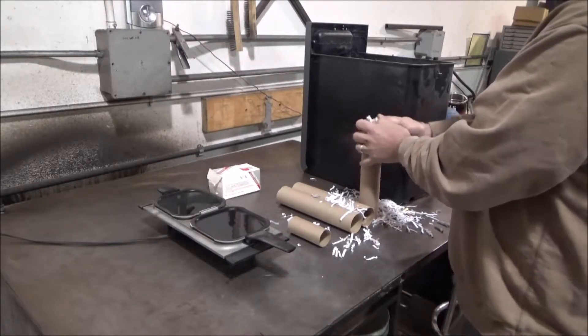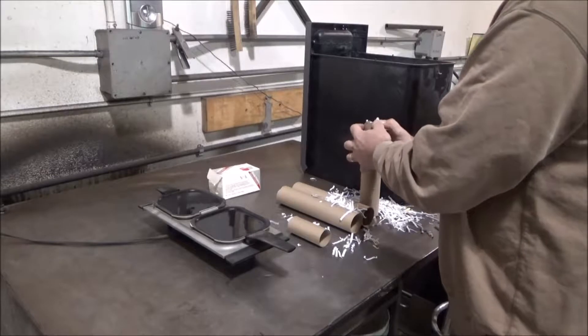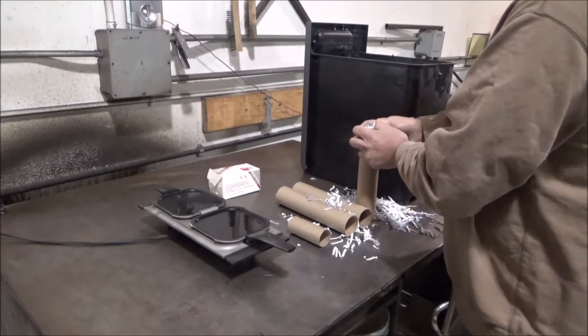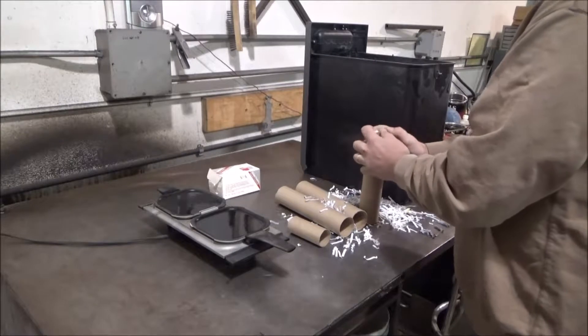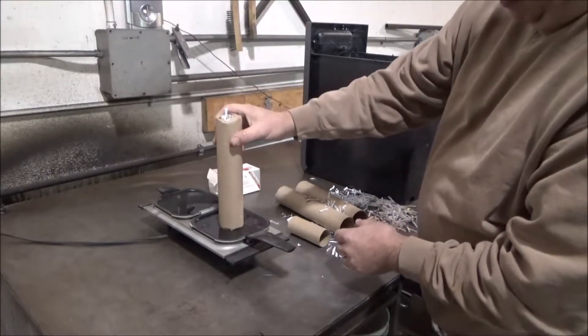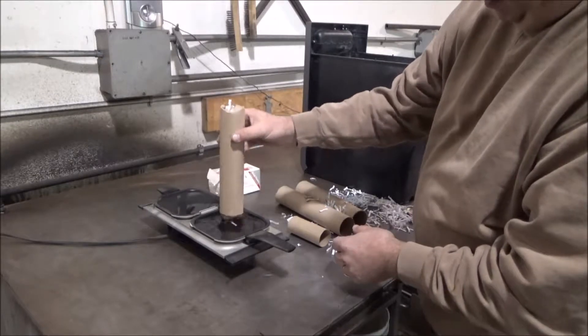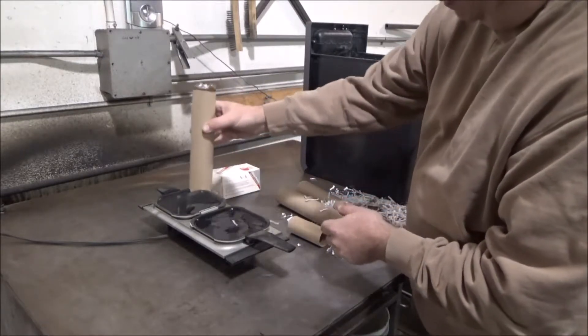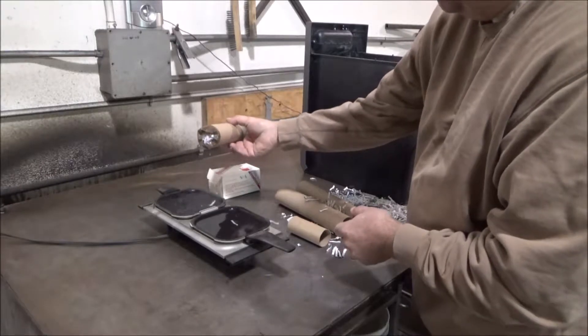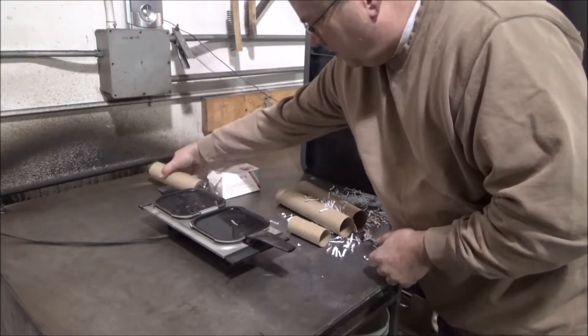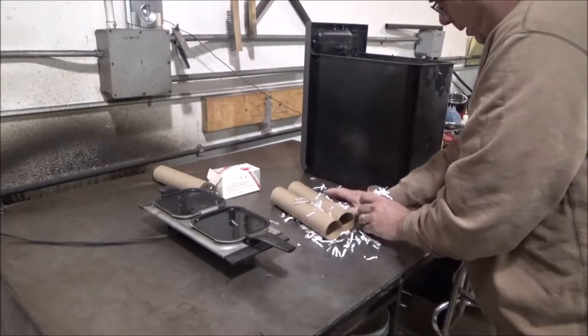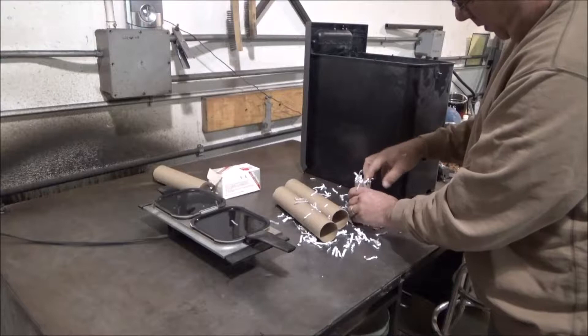I just fold the ends a little bit to help hold the paper in. Once that's done, then dip the ends in my wax. That helps seal it and keeps the paper from falling out. It also makes it a little easier when you go to start them. Then I set those off to cool. I also save up the toilet paper roll tubes so I can make smaller ones.